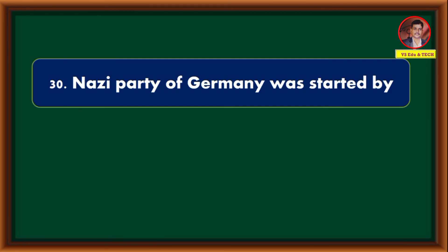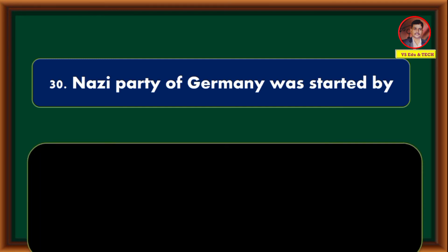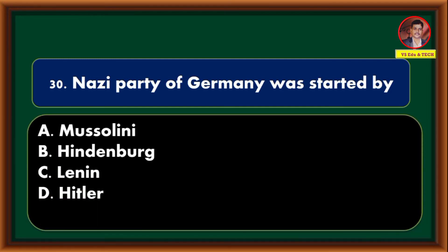The Nazi Party of Germany was started by — Mussolini, Hindenburg, Lenin, Hitler. Correct answer is option D: Hitler.